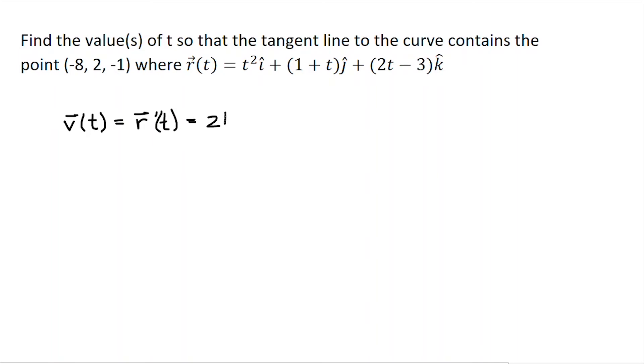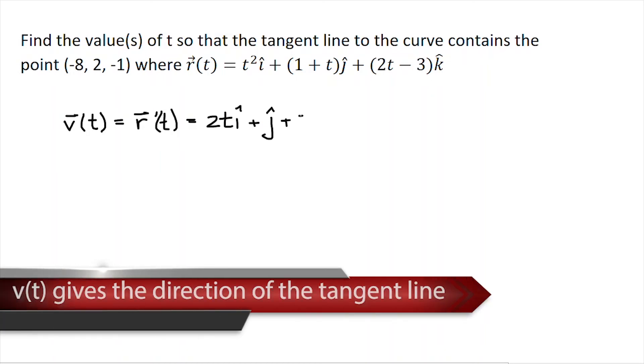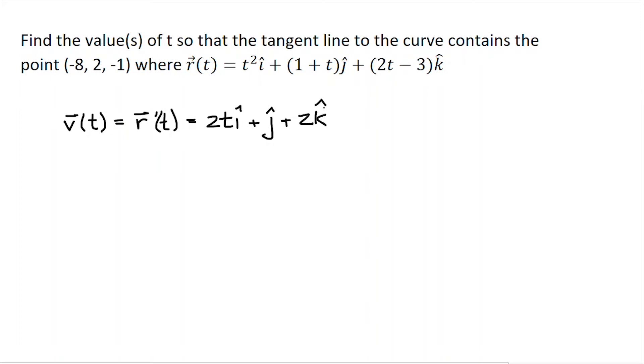That's pretty straightforward, that is going to be 2ti + j + 2k. So that is the line of tangency, or the direction vector of the tangent line.